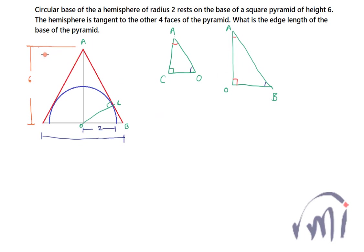We are given that the height of the pyramid is 6, that means AO is equal to 6, and we are also given that the radius of the hemisphere is 2, that means OC is equal to 2.